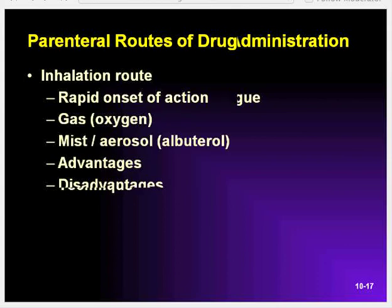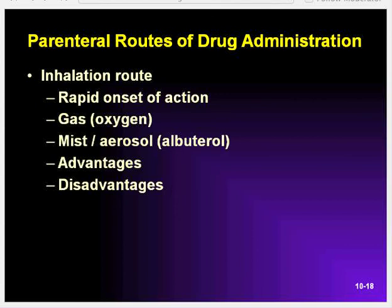Next, we have the inhalation route. Drugs given by the inhalation route have a rapid onset of action due to the large surface area and blood supply of the lungs. To ensure normal gas exchange of oxygen and carbon dioxide continues, drugs given by inhalation must be in the form of a gas, such as oxygen, or a fine mist, such as an aerosol. Oxygen is given for its systemic effects, while a metered dose inhaler such as albuterol is given for localized effects.